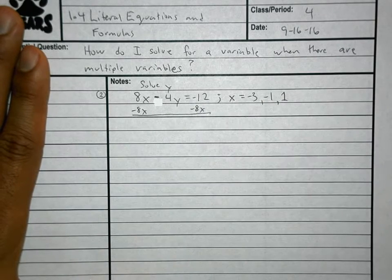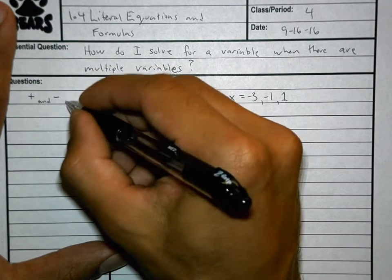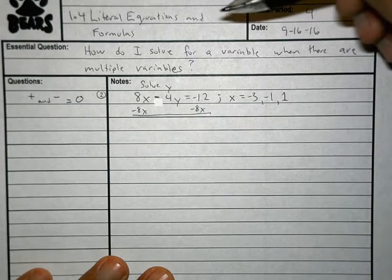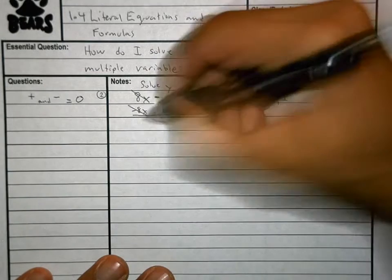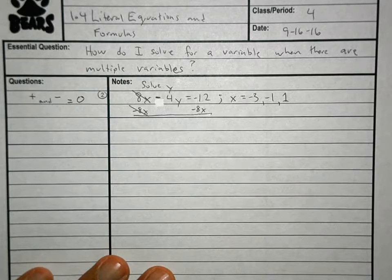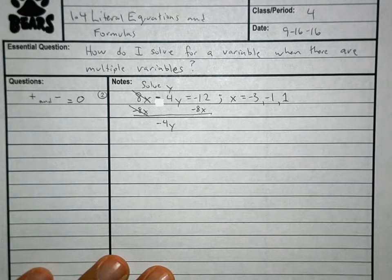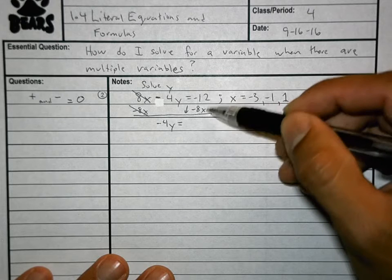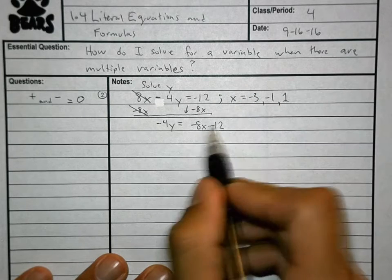Draw a line like this. A positive and a negative is what adds to equal 0 — it's the only thing we can do to get variables to cancel out or move to the other side. 8x minus 8x makes 0. On this left side, this is a negative 4y by itself. I bring down the equal sign. This negative 12 and this negative 8x are not like terms, so we cannot put them together. That means we write out negative 8x minus 12.